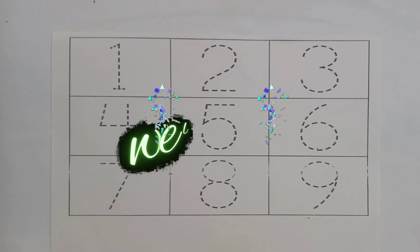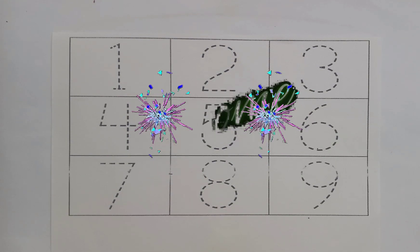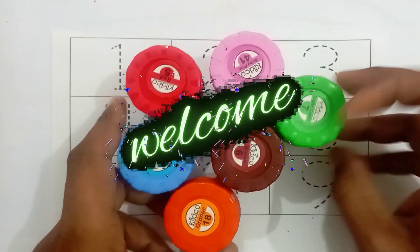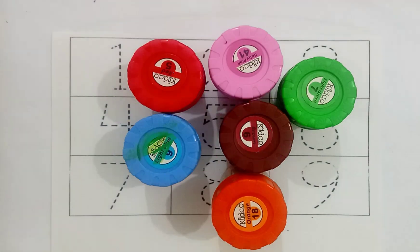Hello kids, welcome to my channel. Today you learn color names and numbers 1 to 9. First color name: